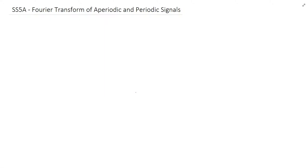In this video we're going to talk about the discrete time Fourier transform. Earlier we talked about the continuous time Fourier transform, and if you recall, the Fourier transform is an extension of a Fourier series that allows us to deal with signals that are non-periodic or aperiodic. So let's go ahead and start with an example.